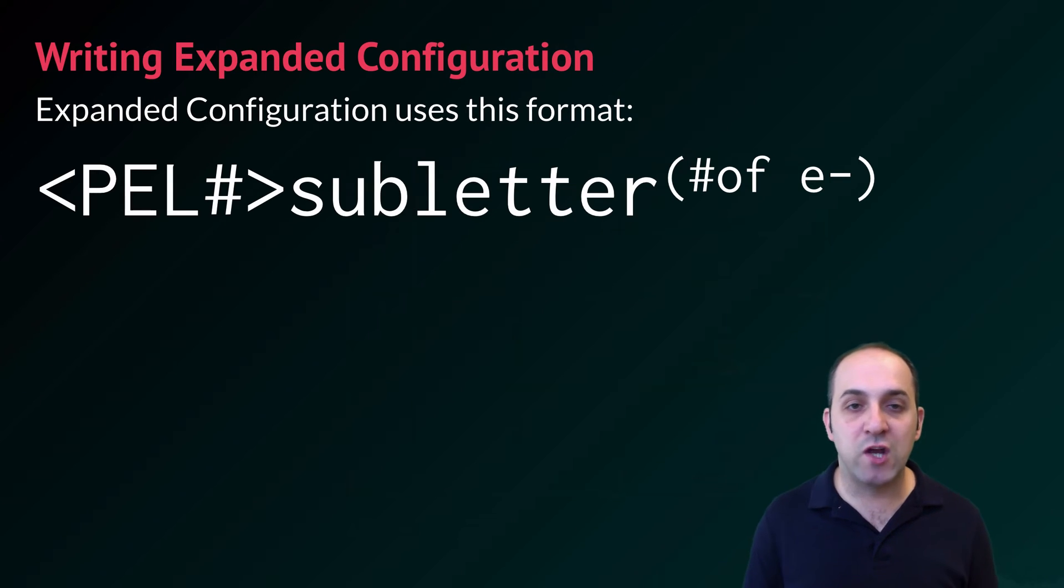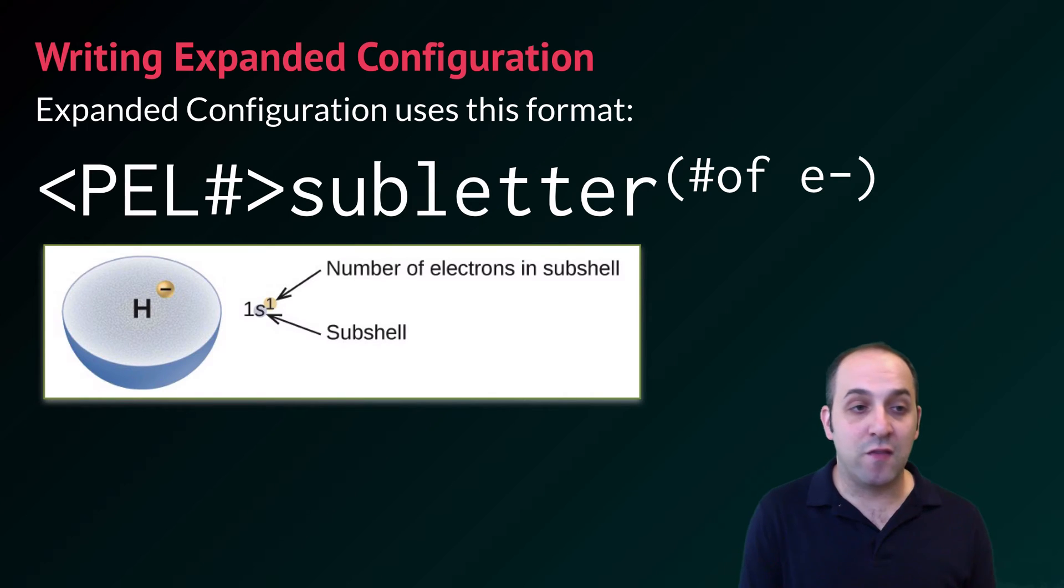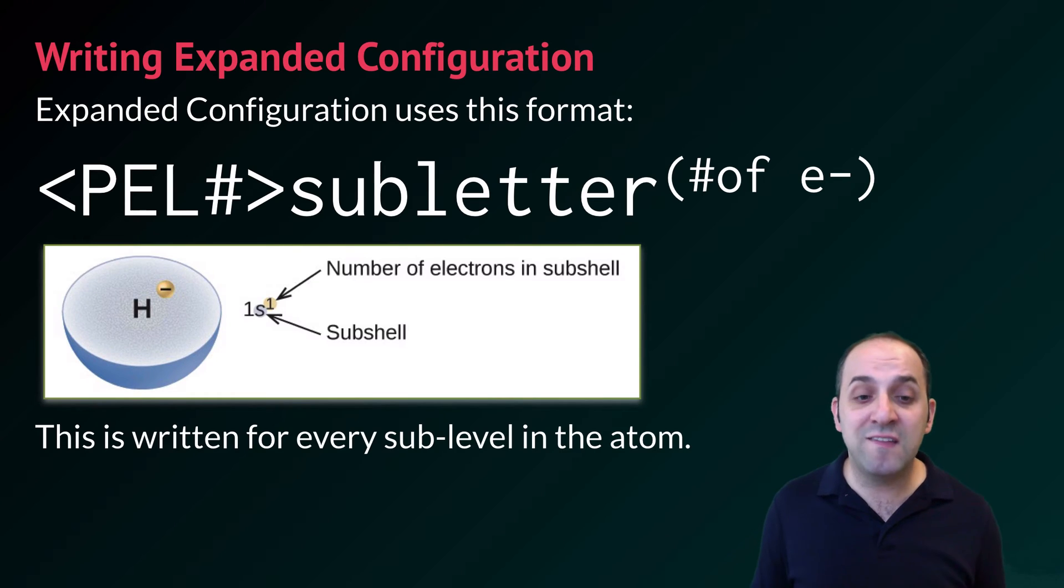When we write an expanded electron configuration, we're always going to use this format. We're going to have a number to represent the principal energy level, and then the sublevel letter, and then as a superscript we're going to put the number of electrons that occupy that sublevel. If we consider hydrogen's one electron, that's in the first principal energy level and its S sublevel, and so what we would write is 1s1 to demonstrate that there's one electron in that sublevel. This is actually going to be done for every sublevel in the atom. It's probably best to look at some examples.